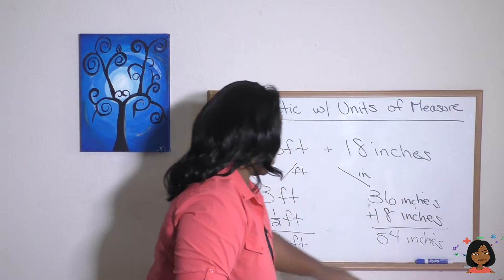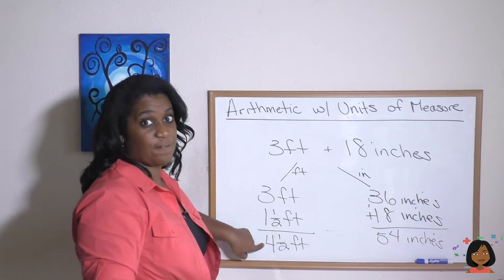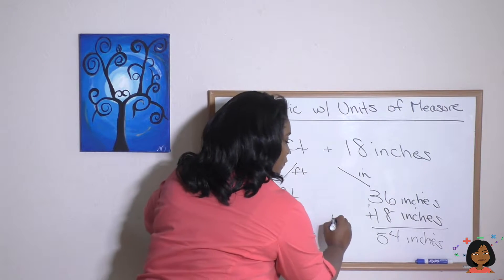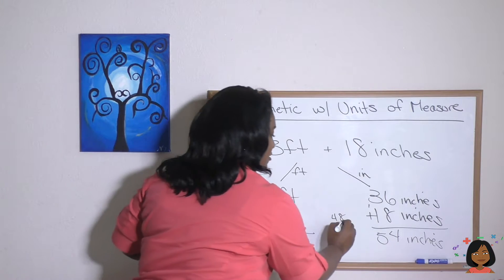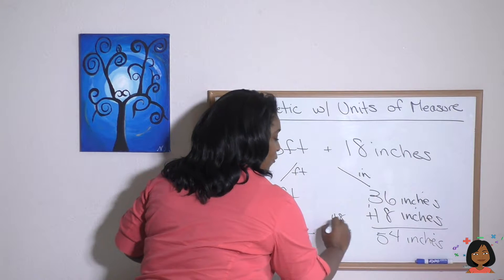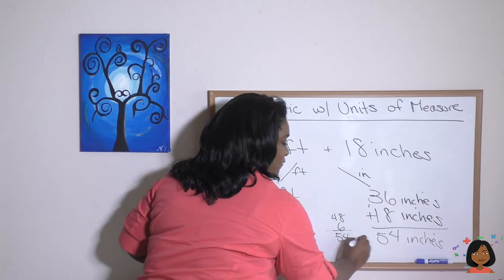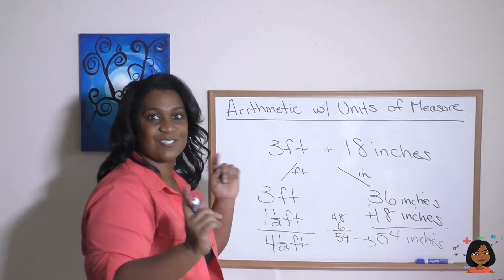And let's check it. Well, four feet we know is 48 inches, 48 plus, here's our half foot, which is six, 48 and six happens to be 54. So our answers are equal. That was adding different units of measure.